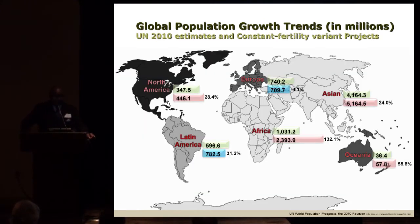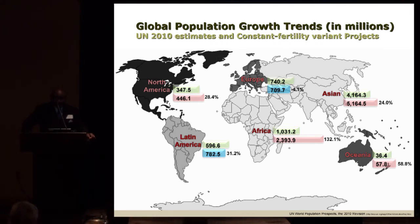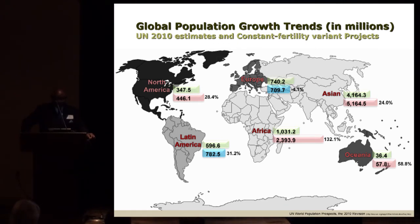This trend is worldwide. The 2010 UN population estimates show North America at 347 million, Africa at 1 billion, Asia at 4.16 billion, and Europe at 740 million. By 2050, North America is estimated to grow to 446 million, Africa to almost 2.4 billion, Asia to 5.1 billion, while Europe shrinks a little.